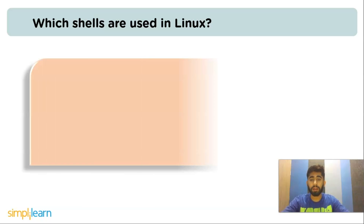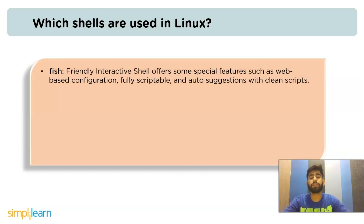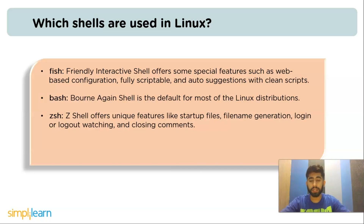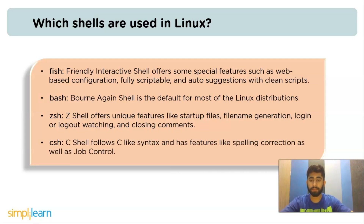The last basic component is application programs — software programs designed to complete a particular task. The next question is: which shells are used in Linux? The most common types are: FISH (Friendly Interactive Shell), which offers web-based configuration, fully scriptable features, and auto-suggestions; Bash (Bourne Again Shell), which is the default for most Linux distributions; Zsh (Z Shell), which offers unique features like startup files, filename generation, and login/logout watching; and CSH (C Shell), which follows C-like syntax and has features like spelling correction and job control.